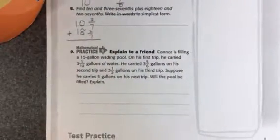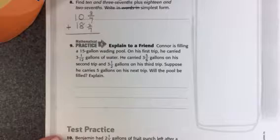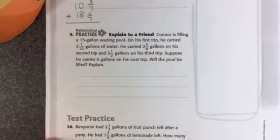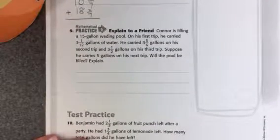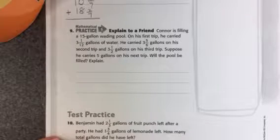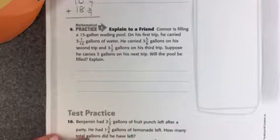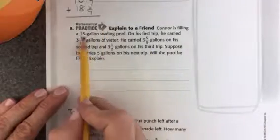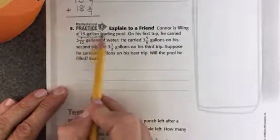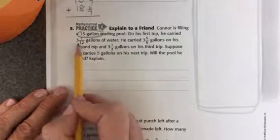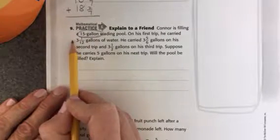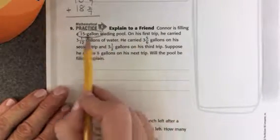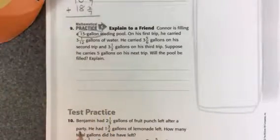Let's look at number 9. Connor is filling a 15-gallon wading pool. On his first trip, he carried 3 and 1 twelfth gallons of water. He carried 3 and 5 sixths gallons on his second trip and 3 and 1 half gallons on his third trip. Suppose he carries 5 gallons on his next trip. Will the pool be filled? Explain. He has a 15-gallon wading pool. So I need to see if I add these numbers up if it's going to get to 15 gallons.